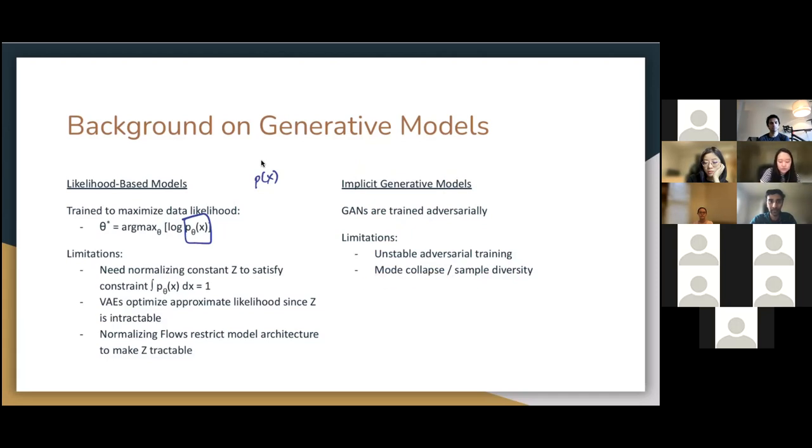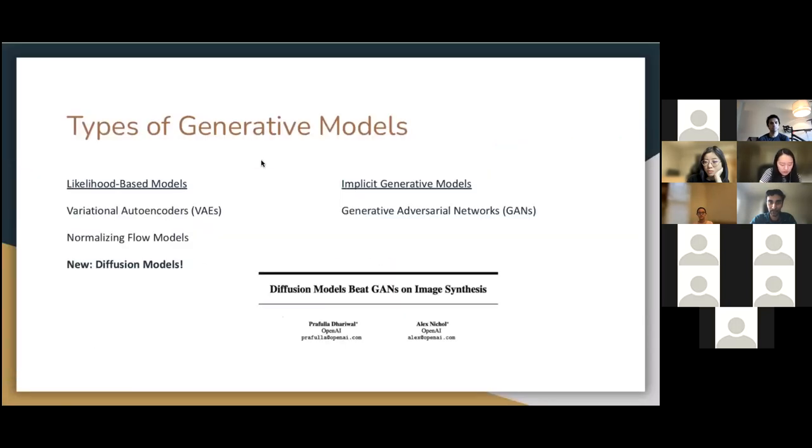So if a distribution has many peaks, some of them might just disappear from the models that are generated. And likelihood-based models usually don't have troubles with mode collapse, because if this peak disappears, then the data likelihood would not be good. But because we maximize the data likelihood, we capture the peaks. Okay, so moving on to the new type of model, diffusion models, which are able to outperform GANs now.